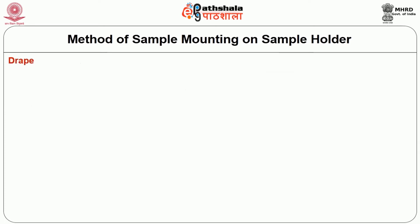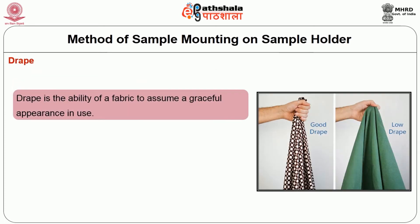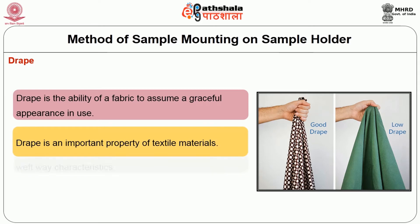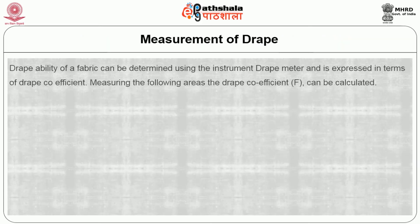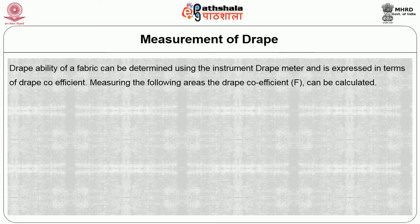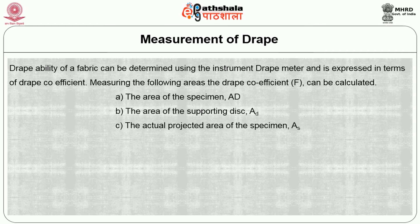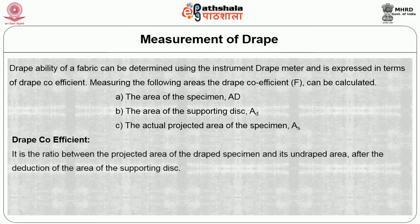The last serviceability property of the woven fabric is drape. Drape is the ability of the fabric to assume a graceful appearance in use, and it is an important property for textile materials. It is a result of the interaction between warpway and weftway characteristics of the woven fabric. The ability of a fabric to drape can be determined using the instrument drape meter, expressed in terms of drape coefficient. The drape coefficient is characterized by: the area of the specimen, the area of the supporting disc, and the actual projected area of the specimen. The drape coefficient is the ratio between the projected area of the draped specimen and its undraped area after deducting the area of the supporting disc, given by a simple formula.